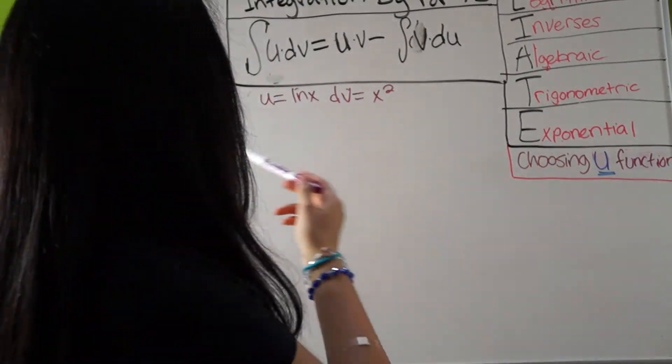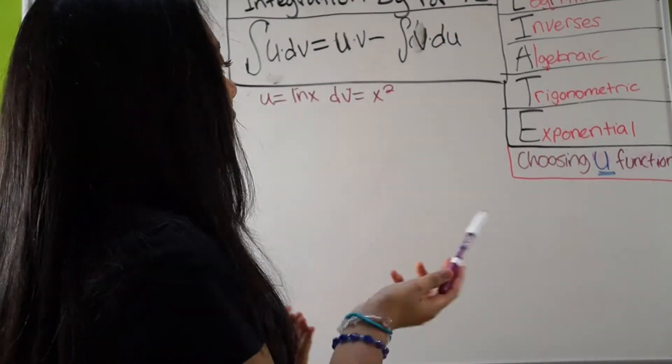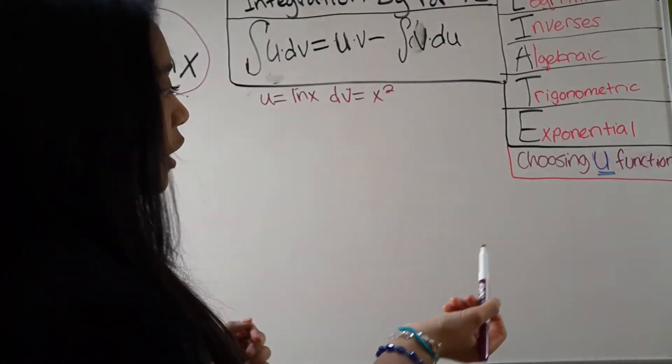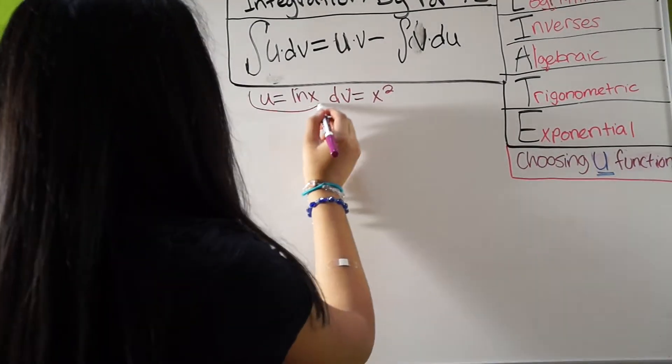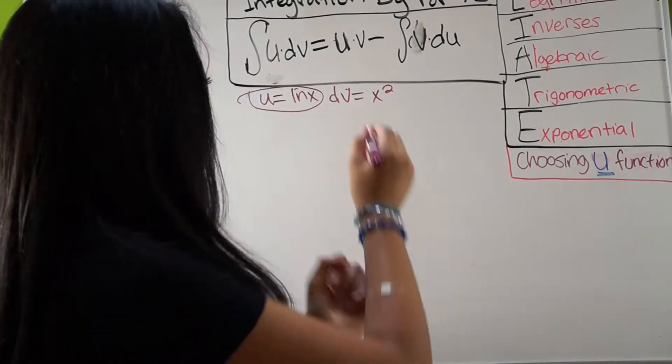It's to choose your u as your u function. So, over here, this is like what you should choose in order to be your u. So, here, our u is ln x, and our dv is x squared.